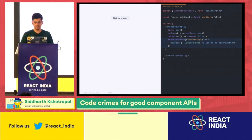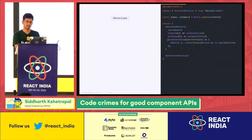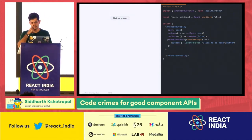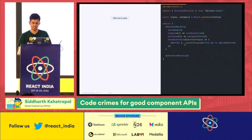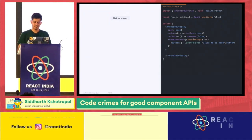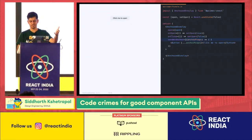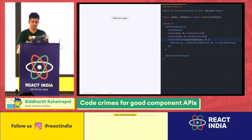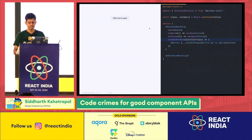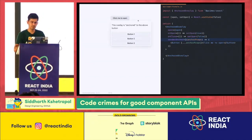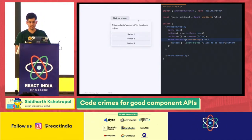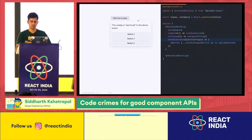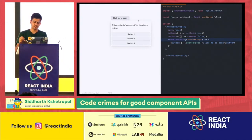You also have to pass a prop called renderAnchor. This is the render props API that was popular a few years ago — you pass a function as a child and it passes the props you need. There is some inversion of control here; inside the anchor props there are things like aria labels and IDs to match the overlay, which are already handled so you just pass them down.